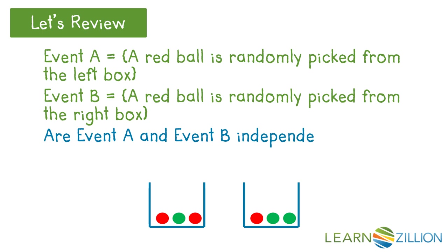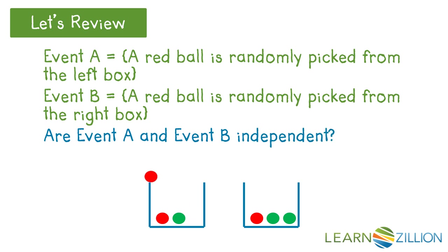Are event A and event B independent? Well, right now, the probability of a red from the right box is one-third. And if a red ball is picked from the left box, the probability of a red from the right box is still one-third. These events are independent.